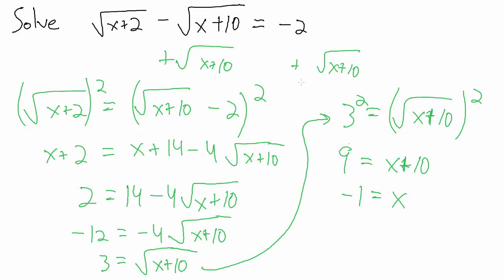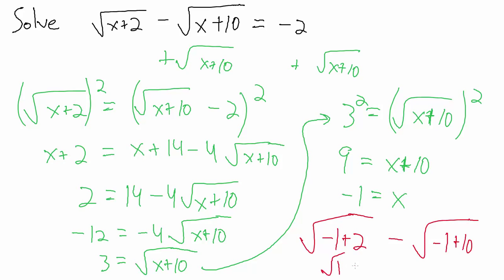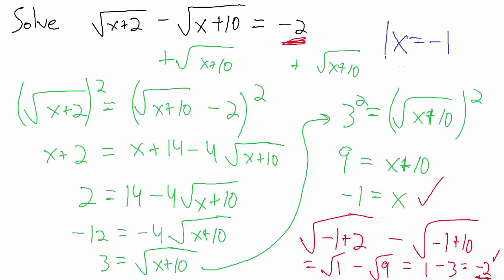We want to make sure x equals negative 1 actually solves the original equation. Going back to the very first equation, plug in negative 1 for x: the square root of (negative 1 plus 2) minus the square root of (negative 1 plus 10). That's the square root of 1 minus the square root of 9, which is 1 minus 3, which equals negative 2. That's exactly what we wanted. So x equals negative 1 is the only solution to this equation.